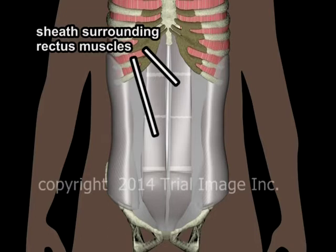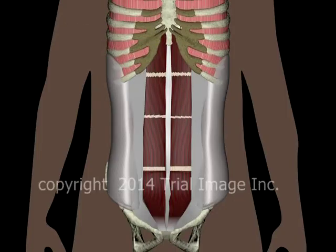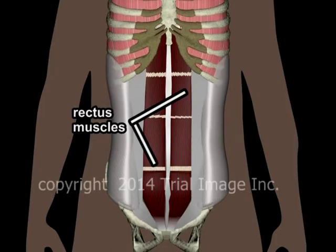In this image, I have highlighted the sheaths surrounding the rectus abdominus muscles. And here we see the rectus abdominus muscles with the fascia removed.